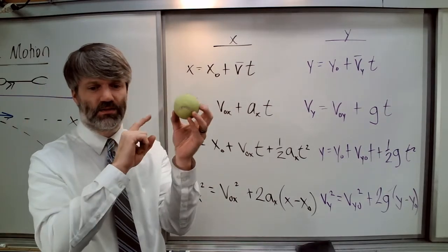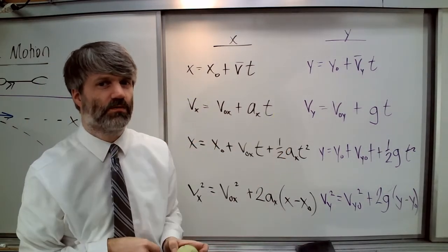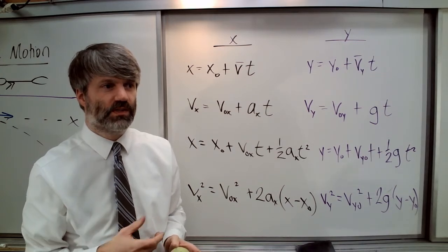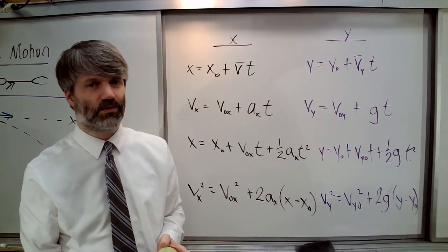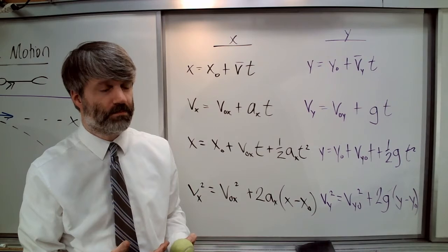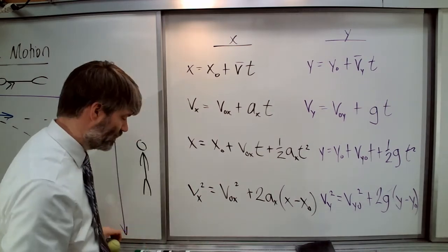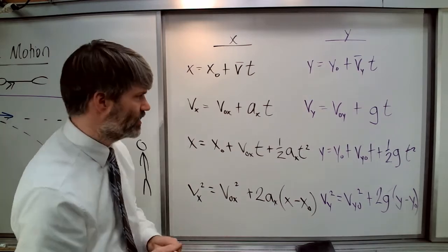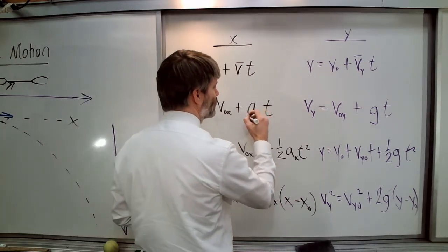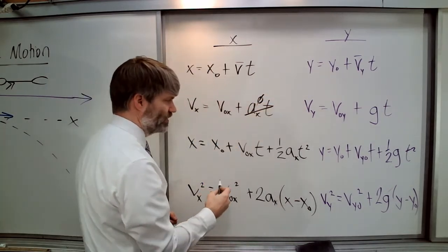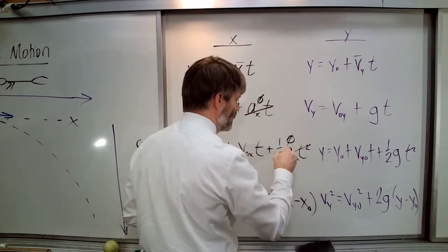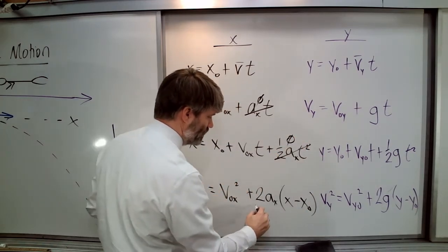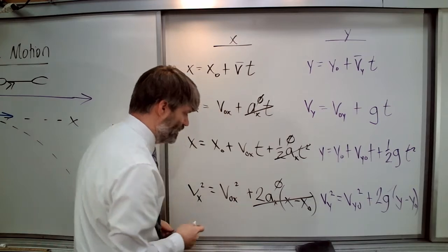After it leaves my hand, there's nothing pushing it to make it go faster anymore. So what is its acceleration in the x-direction? There is none. Acceleration is zero in the x-direction, which is very convenient. Because if that is zero, and that is zero, and that is all zero.